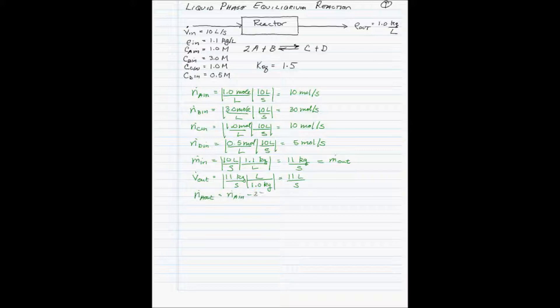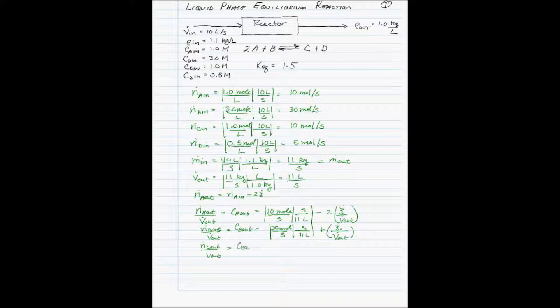Let's do a molar balance for component A around the reactor. Its flow rate leaving equals its flow rate entering minus 2 times the reaction extent. Dividing by the volumetric flow rate out gives the concentration of A leaving the reactor: 10 moles per second divided by 11 liters per second, minus 2 times the reaction extent divided by the volumetric flow rate out. We do the same for components B, C, and D to calculate their outlet concentrations as well.